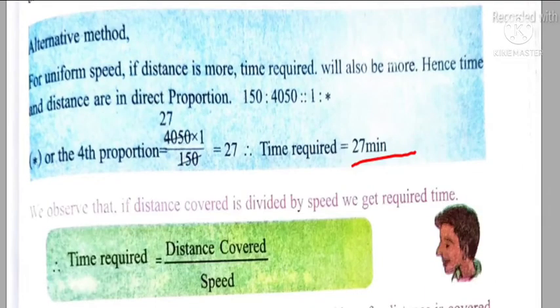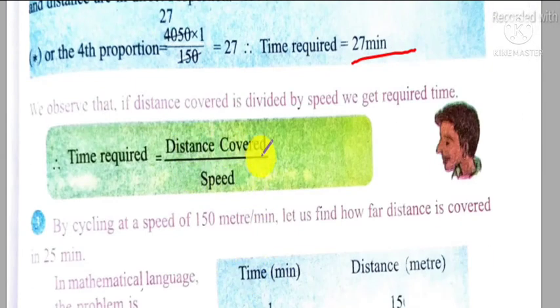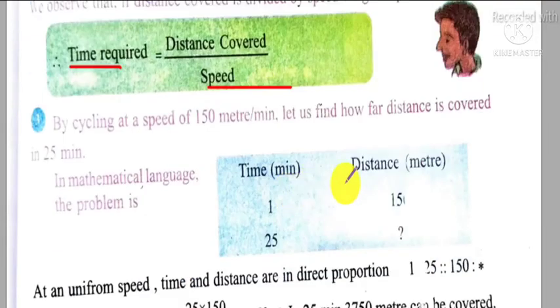So if we want to find out the time, then we have to divide distance by its speed. If we want to find out the distance covered by the object, then we have to multiply time and speed. For example, here time was given and we have to find out the distance. So distance will be just the product of time required and the speed of the object.